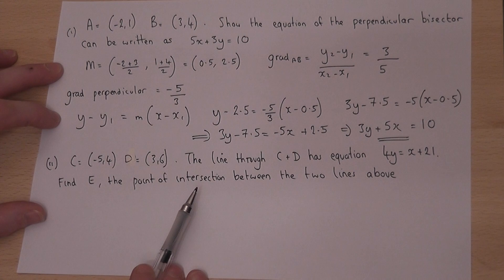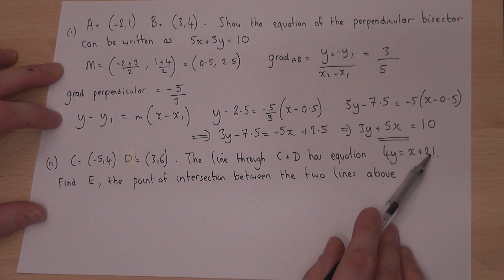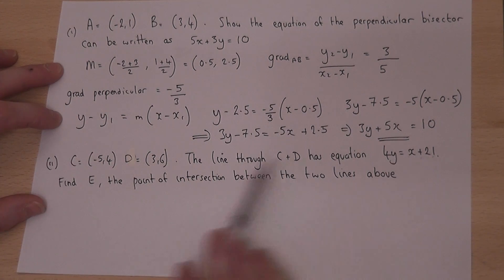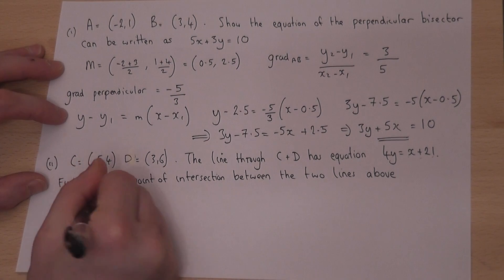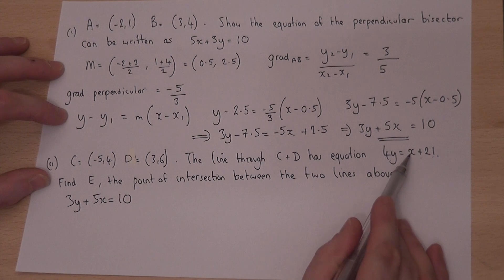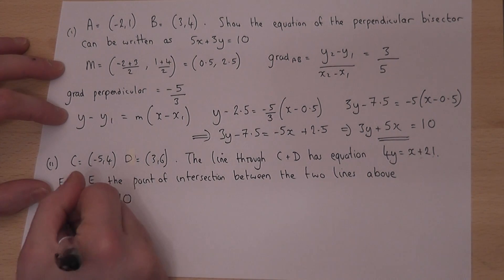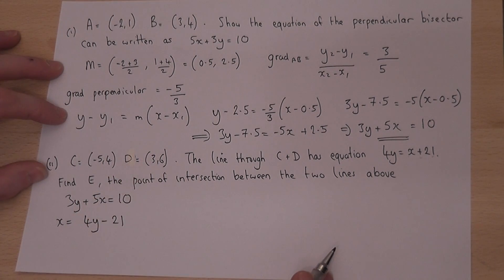Right, we're then given a new line which has the equation 4y equals x plus 21. And we're asked to find the point where this line intersects that line. So for this, we have to use simultaneous equations. So 3y plus 5x equals 10. Now, if I rearrange this, I can get x is equal to 4y minus 21. So I can therefore sub in 4y minus 21 where we have x.